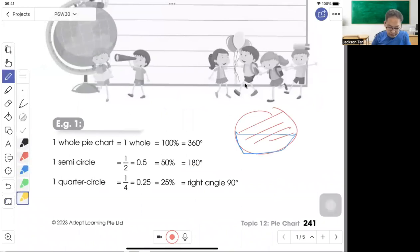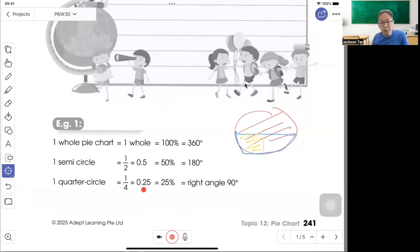And one quarter circle will be 1 out of 4, decimal 0.25, percentage 25%, and the angle is one right angle.